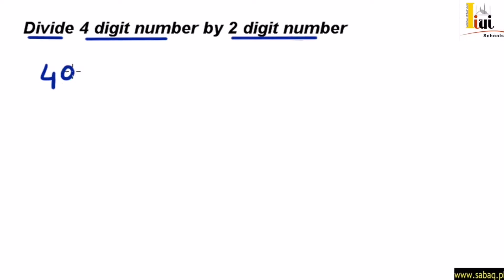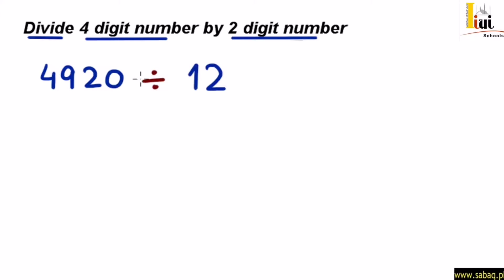हमारे पास नंबर है 4920। इसको हमने divide करना है — ये divide करने का निशान है — 12 से। 4920 एक 4-digit number है, इसमें 4 digits हैं: 4, 9, 2 और 0। और 12 एक 2-digit number है, इसमें 2 digits हैं: 1 और 2।